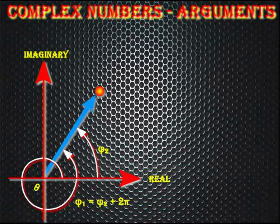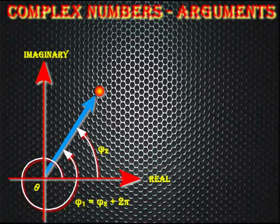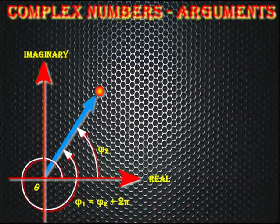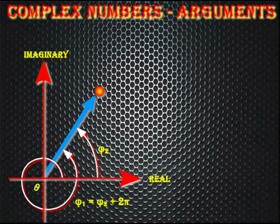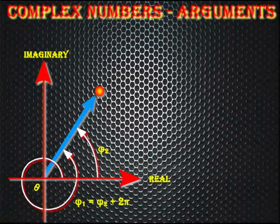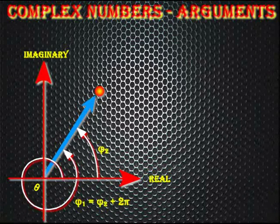Now, in this second lecture we are going to study about some of the very important properties of arguments. We are going to see the geometrical meaning of addition, subtraction, multiplication and division of complex numbers. Then we are going to study about the famous De Moivre's theorem and the Coney's rotation formula, and we are also going to see the sectional formula for the internal and external division of complex numbers.